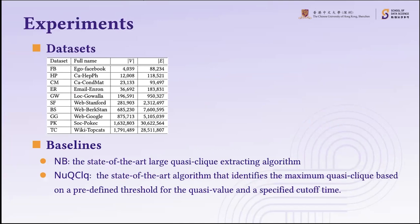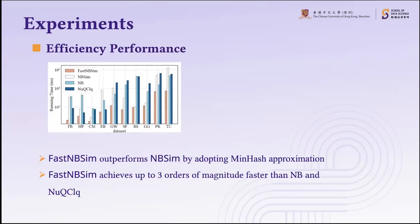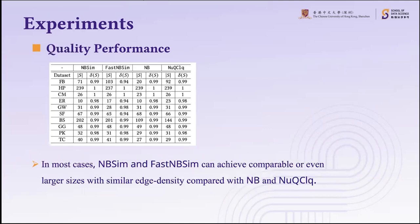We use 10 real datasets to test our two algorithms and compare them with the baselines NB and UQCLQ. For efficiency, Fast-MBSM outperforms MBSM by adopting MinHash approximation, and Fast-MBSM is up to three orders of magnitude faster than NB and UQCLQ. For quality, in most cases MBSM and Fast-MBSM achieve comparable or even larger quasi-clique sizes with maximum similar edge density compared with NB and UQCLQ.